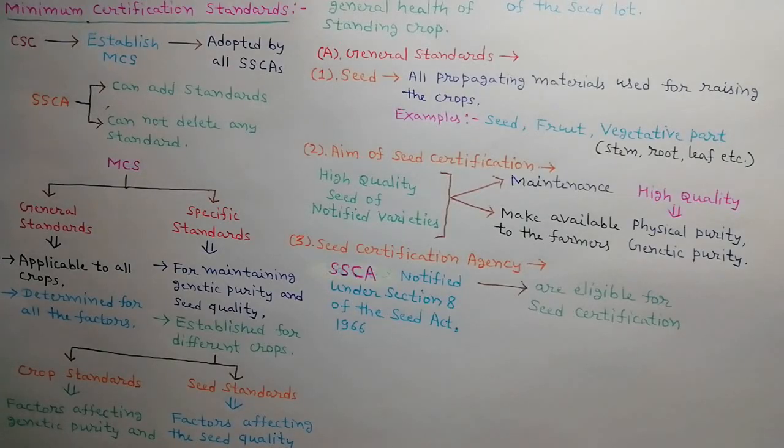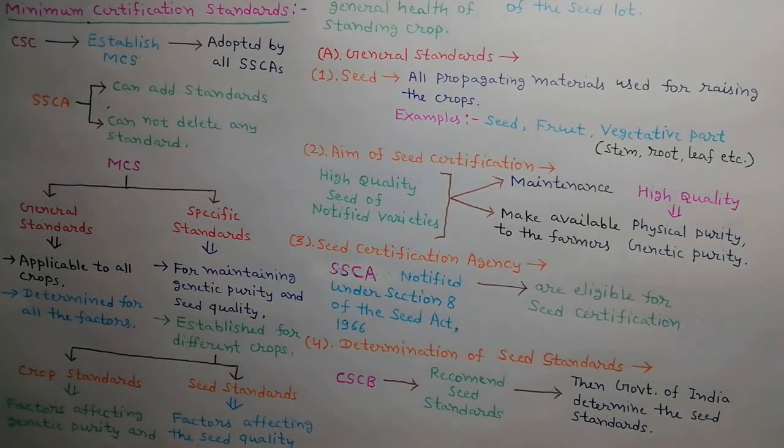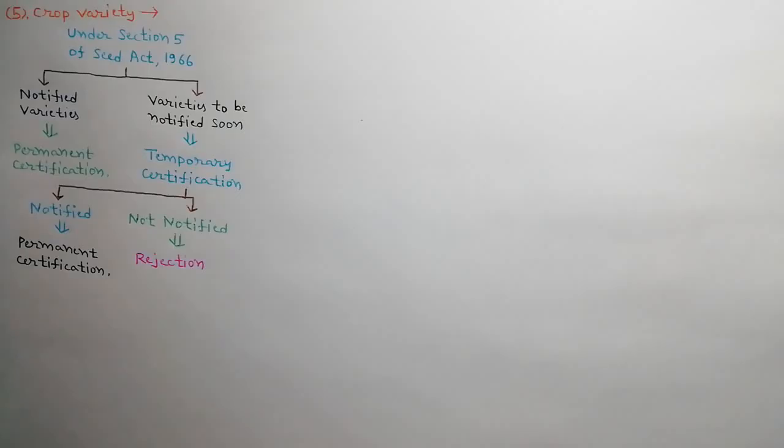Seed certification is done by a state seed certification agency notified under Section 8 of the Seeds Act, 1966. The seed standards are determined by the Government of India on the recommendation of the Central Seed Certification Board. Only seeds of crop varieties notified under Section 5 of the Seed Act, 1966 can be certified. Varieties to be notified soon can be certified temporarily, which can be rejected later in the absence of notification.